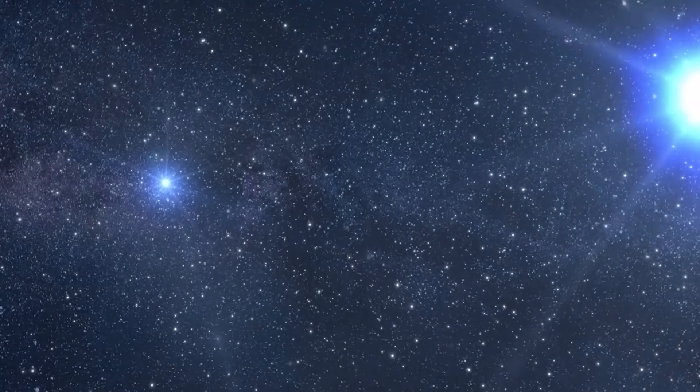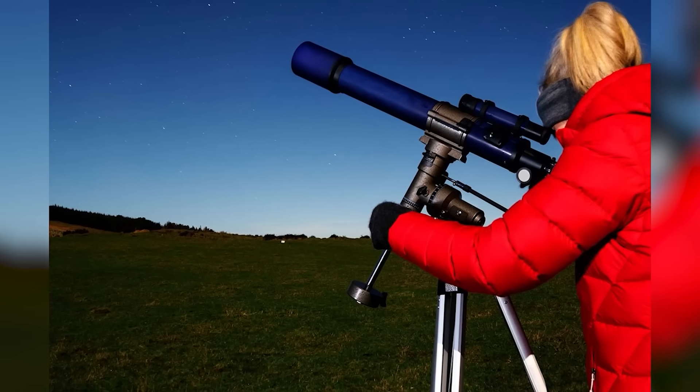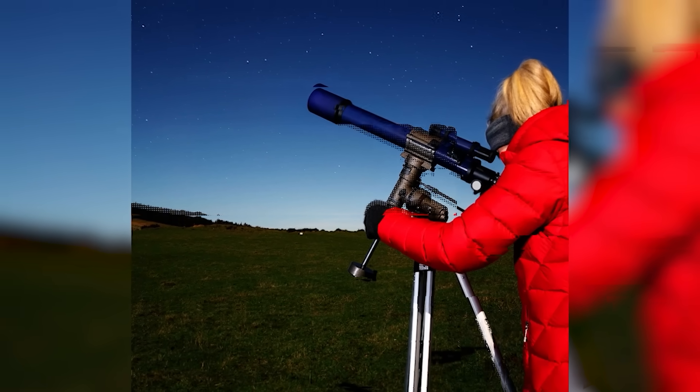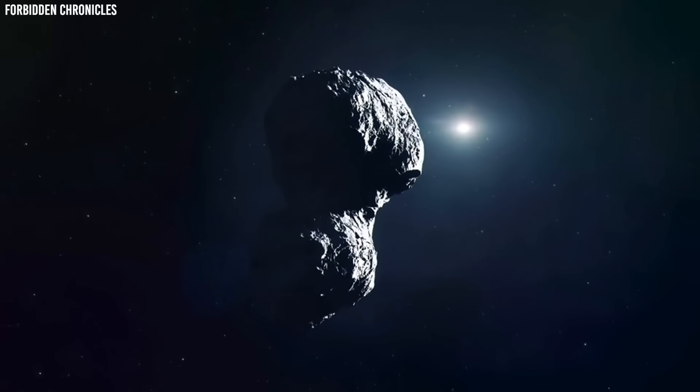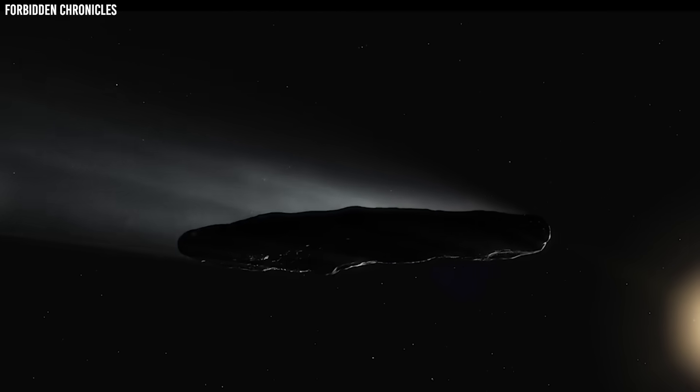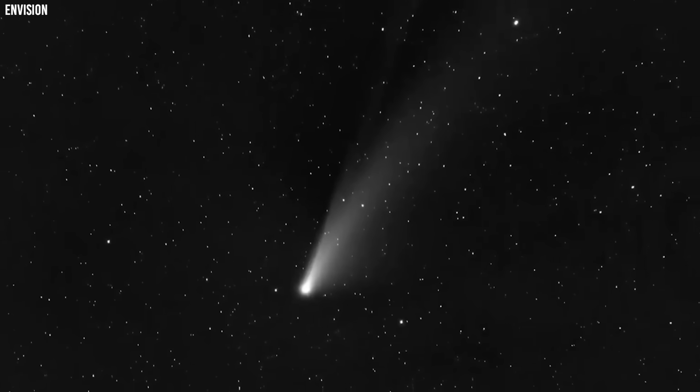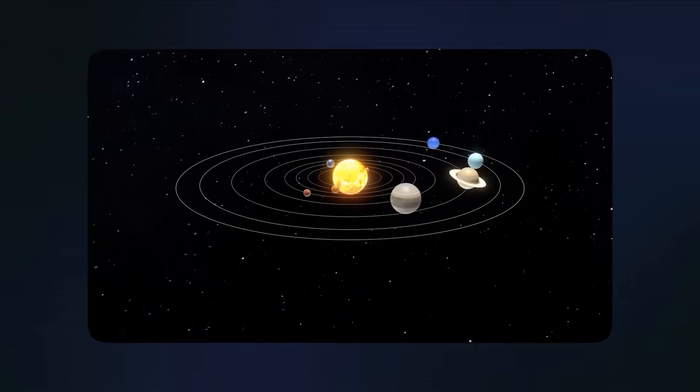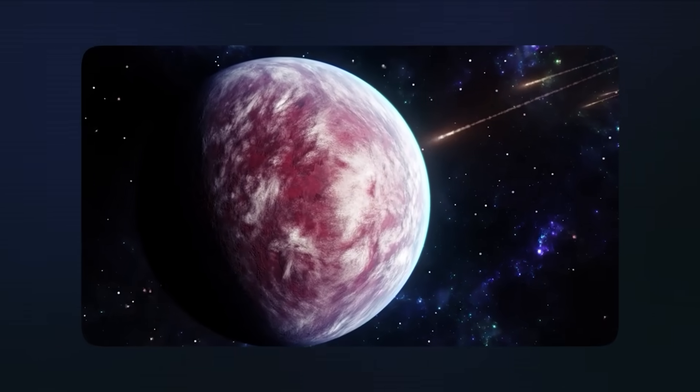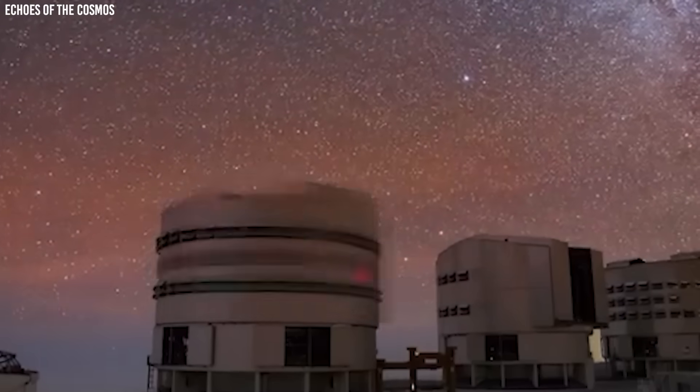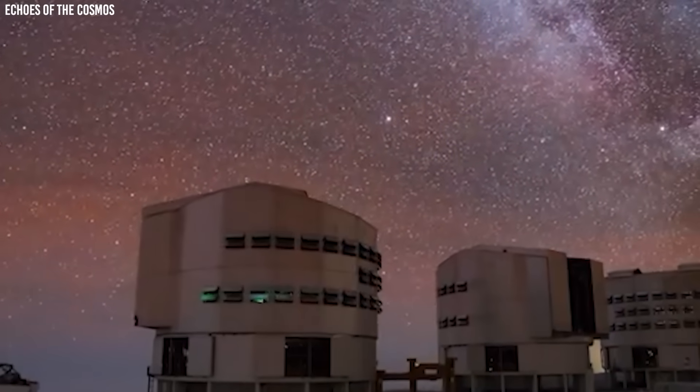For casual observers, a pair of 7x50 or 10x50 binoculars will show the comet's fuzzy coma quite well. If you have a small telescope, use the lowest magnification you have to get the best view of the tail. The optimal viewing conditions depend heavily on your local light pollution levels and atmospheric conditions. From urban areas, SWAN may be difficult to spot without optical aid due to sky glow washing out the fainter parts of the coma and tail. Rural observers under dark skies will have a significant advantage.